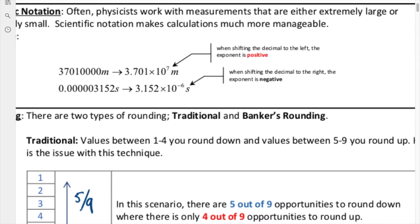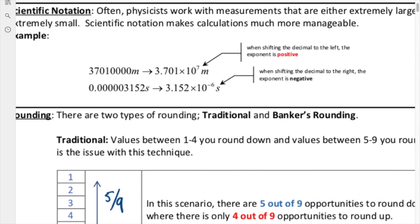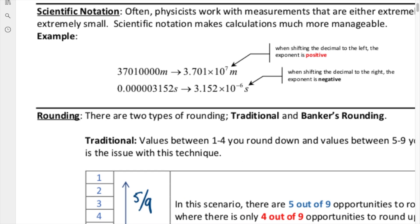Let's take a look at an example of how we achieve scientific notation. When we look at this particular notation here, we want to take this rather large number. I'm just going to add a few commas in here so it's a little bit more readable. So this would be 37,010,000 meters.